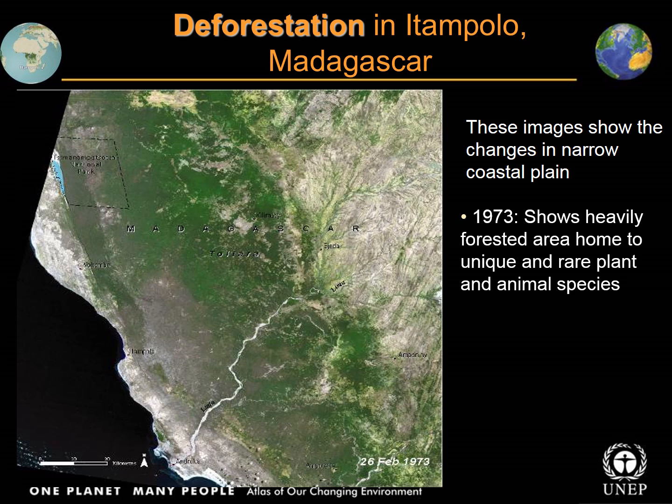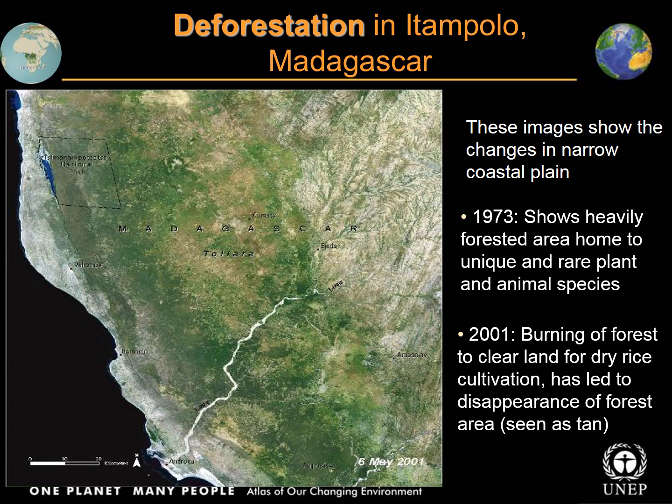Let's take a look at Madagascar, famous for its rainforest. In a picture from 1973, you can see dark green throughout the area, showing extensive rainforest — except perhaps on the hilly areas. Now let's take a look at how the color changes in 2001: look at all that brown and gray. So much of that forest is gone now. In this case, the forests were burned clear to make room for rice cultivation.